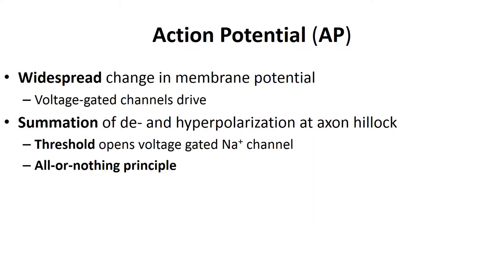Action potentials can occur as a result of graded potentials. If the graded potential reaches the axon hillock, the voltage-gated channels there open, causing sodium ions to flow into the axon and switching the charge across the axolemma. This causes voltage channels to open all the way down the axon as the action potential moves down its length — this is called propagation of the action potential — generating a change in charge from approximately minus 60 millivolts to positive 30 millivolts. Once generated, an action potential cannot be stopped; this is referred to as the all-or-none principle.